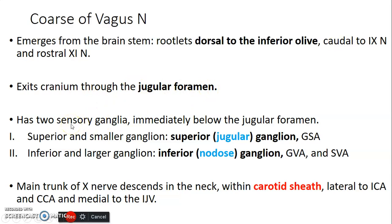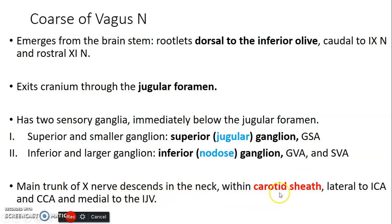It has two sensory ganglia immediately below the jugular foramen. You have a superior ganglion, which is smaller — that's the superior jugular ganglion — and an inferior ganglion, which is larger, that's the inferior ganglion, also called the nodose ganglion. The superior jugular ganglion carries general somatic afferent, while the inferior ganglion carries general visceral afferent and special visceral afferent. The main trunk of the vagus nerve descends in the neck within the carotid sheath, so it is lateral to the internal and common carotid arteries and medial to the internal jugular vein.